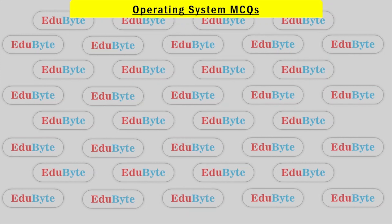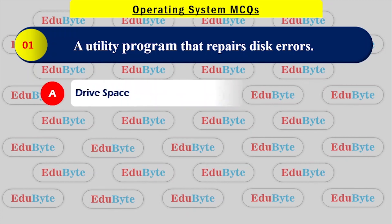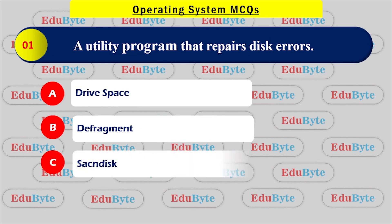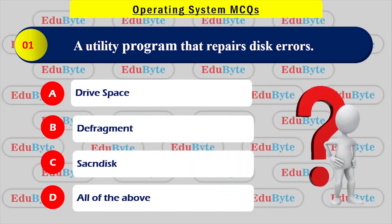Let's start the video. First question: A utility program that detects disk errors. The options are: Option A - Drive space, Option B - Defragment, Option C - Scan disk, Option D - All of the above.